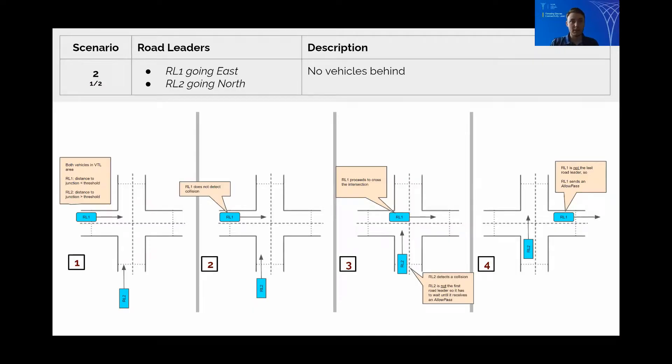So here is a simple scenario of a case with two vehicles for the intersection control algorithm. RL1 which is Road Leader 1 and RL2 which is Road Leader 2 continue to broadcast cooperative awareness messages to all vehicles. Once they're in the VTL or Vehicle Threshold area they will start to save information about their neighbours based on the received CAM messages.